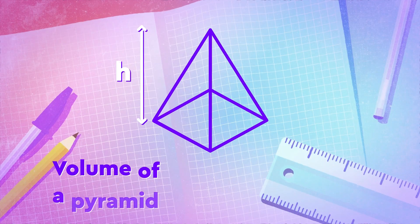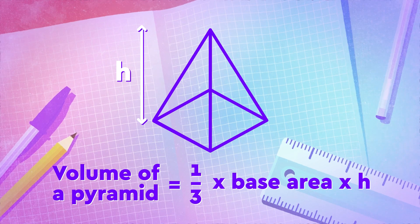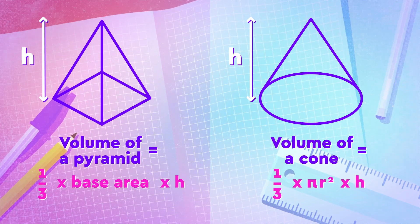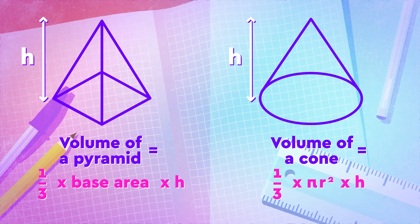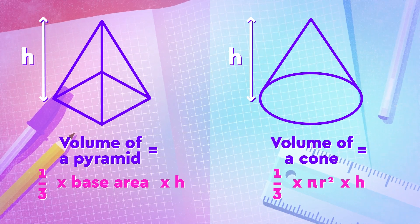The principle to calculate the volume of a pyramid again has similarities with the volume of a cone. The volume of a pyramid is one-third of the base area times the height of the shape from its base. In both cases the volume is one-third of the base area times the height. The only difference between the two shapes is that a cone's base is always a circle, and a pyramid's base is always a polygon of some sort.